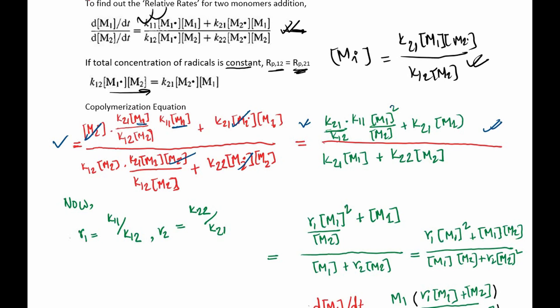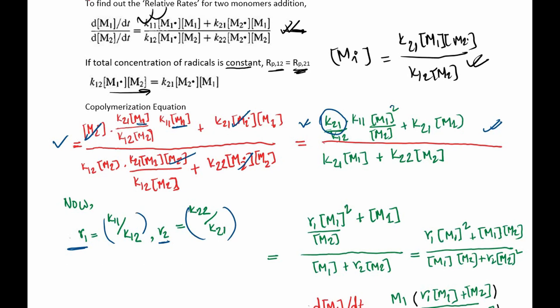After this equation, we are dividing the whole numerator and denominator by our k21 term. Before doing that, I'll note that r1 is the reactivity ratio for monomer 1, defined as k11 over k12, and r2 is the reactivity ratio for monomer 2, which is k22 over k21. So we divide numerator and denominator by k21, eliminating k21 terms and introducing a k21 where there was only k22.